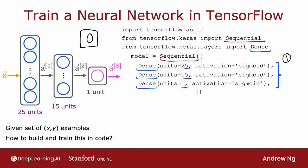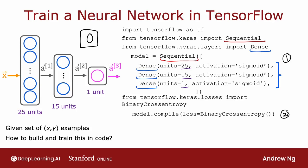So nothing new here relative to what you saw last week. The second step is you have to ask TensorFlow to compile the model. The key step in asking TensorFlow to compile the model is to specify what is the loss function you want to use. In this case, we'll use something that goes by the binary cross entropy loss function.